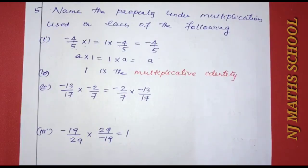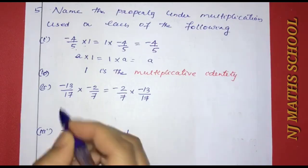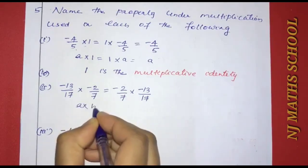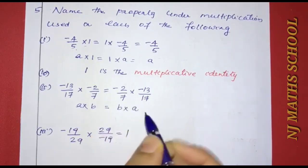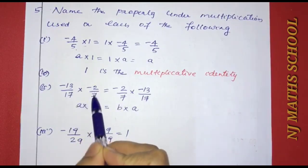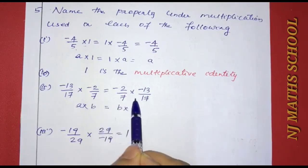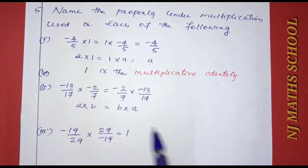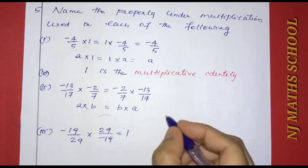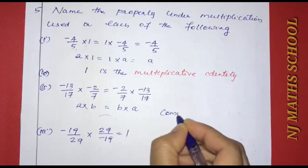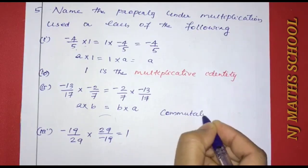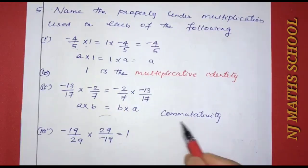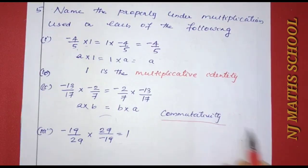Second: negative 13 by 17 into negative 2 by 7 equals negative 2 by 7 into negative 13 by 17. Here A into B equals B into A — the order of multiplication changes but the result is the same. The property used is commutativity.